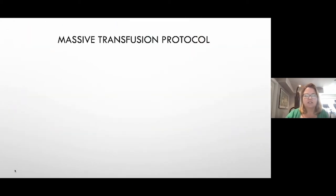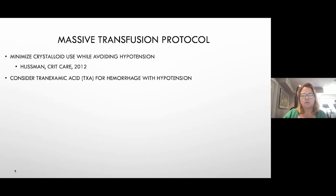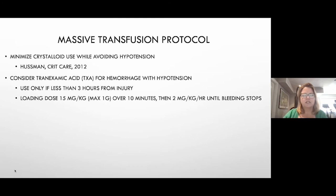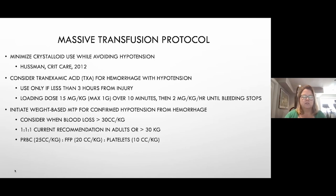Massive transfusion protocols: minimize IV fluids, get blood into the patient right away, use TXA to keep them from becoming hypotensive. Remember to only use TXA within three hours of injury — past that it won't help and may hurt. In children, the dose is 15 mg/kg over 10 minutes, then 2 mg/kg/hour until bleeding stops. In our institution for adults, we've moved to a one-gram bolus in the field — get to the hospital fast, let us know how much you gave, and we'll repeat or stop as needed.